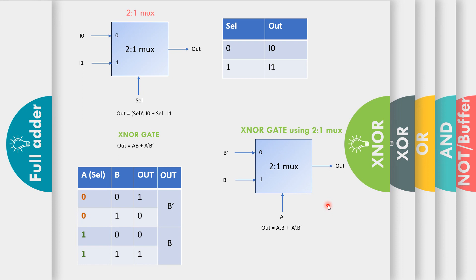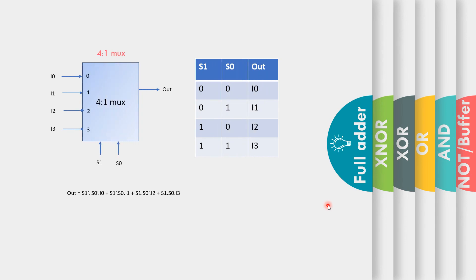Up till now we have seen how to realize any 2-input Boolean expression using 2-to-1 MUXes. In the next section, I will explain how to realize a 3-input Boolean expression using a 4-to-1 MUX, using a full adder as the example. A 4-to-1 MUX has two select lines (S0 and S1) and four data input lines. When S1S0=00, output=I0; when S1S0=01, output=I1; when S1S0=10, output=I2; and when S1S0=11, output=I3.